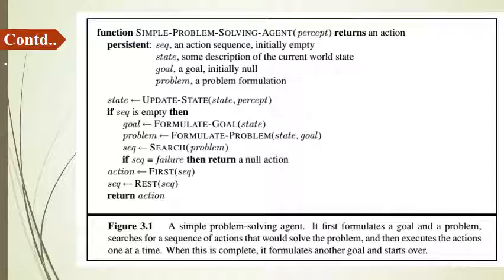We have a simple formulate-search-and-execute design for the agent, shown in figure 3.1. This figure shows how a simple problem-solving agent performs certain tasks or actions for a given problem. The function returns some actions; initially the actions are empty. There will be a state — a description of the current world state — a goal defining the destination, and a problem formulation for the given scenario. The agent will first formulate a goal and a problem, search for a sequence of actions, and then execute those actions. When completed, it formulates another goal and starts over.